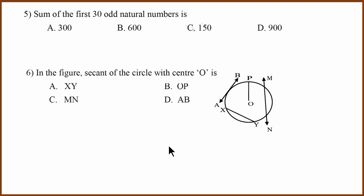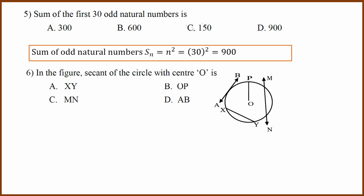Fifth question: sum of 30 odd natural numbers. There is a formula for odd natural numbers: n squared. So 30 squared equals 900. You can also use the S of n formula and substitute to get the same answer. Answer D.